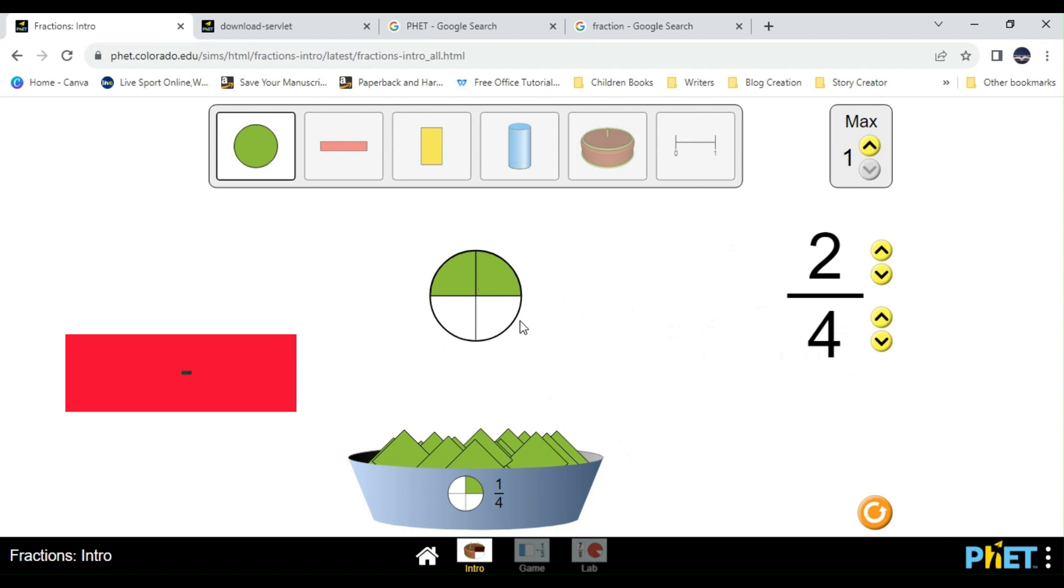So this simulation is very important if you want to understand how fractions work, if you want to understand the basic idea behind the fraction. The key point is this, that the numerator represents the number of selected parts. As we have one, two, three parts selected. And we have four parts of this circle.